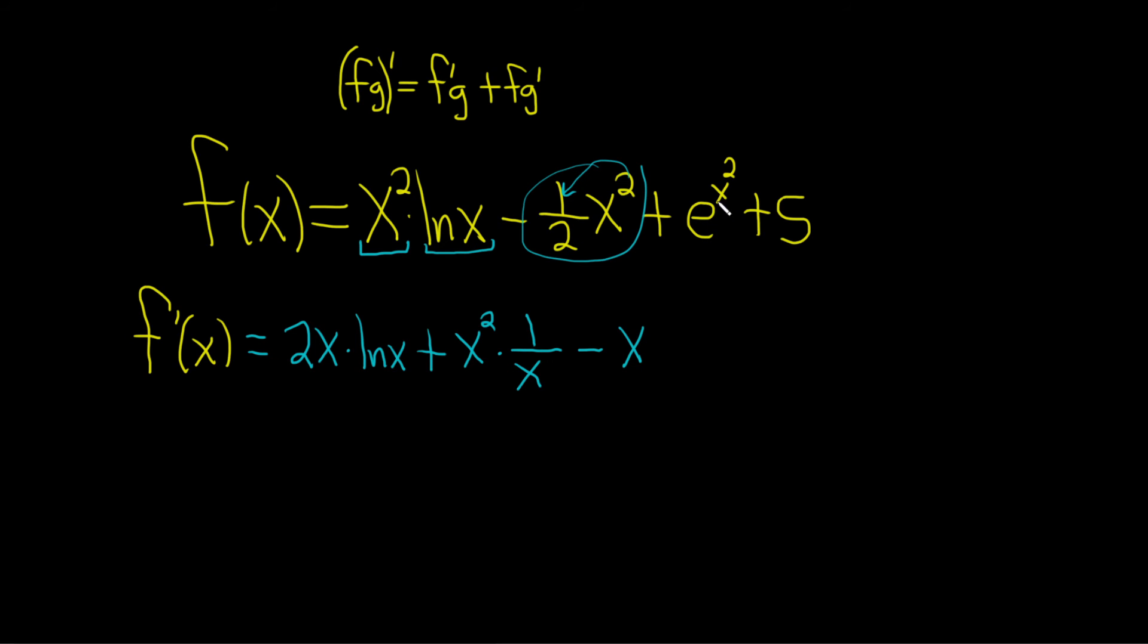The derivative here of e to the x is e to the x. So here it's e to the x squared, and then times the derivative of the inside function. Your inside function is x squared, so you get 2x. That's the chain rule, and then the derivative of 5 is 0.